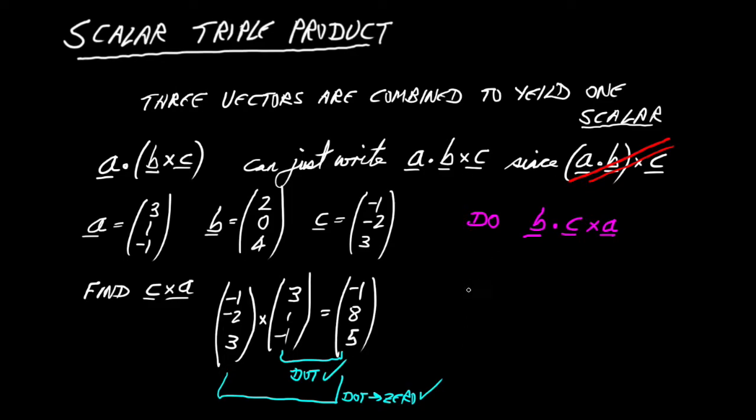So what we're doing is B, which was (2, 0, 4). Dotted with what we found, cross product, (-1, 8, 5). So again, go ahead and evaluate this. Minus 2, 0, and 20. 18 again. Alright. So our second example has also given us 18.